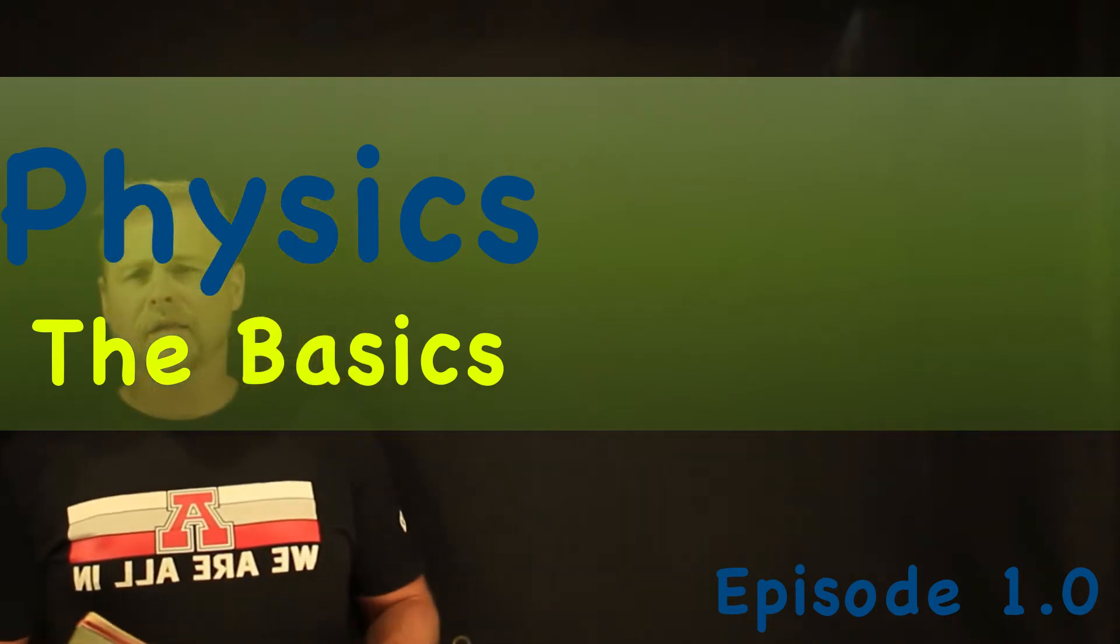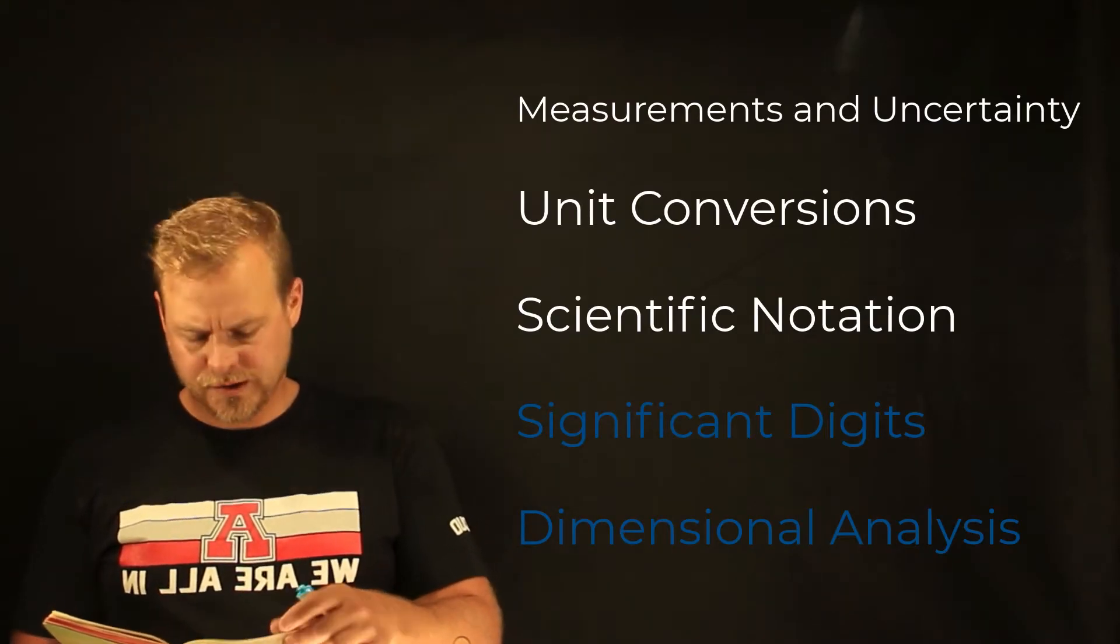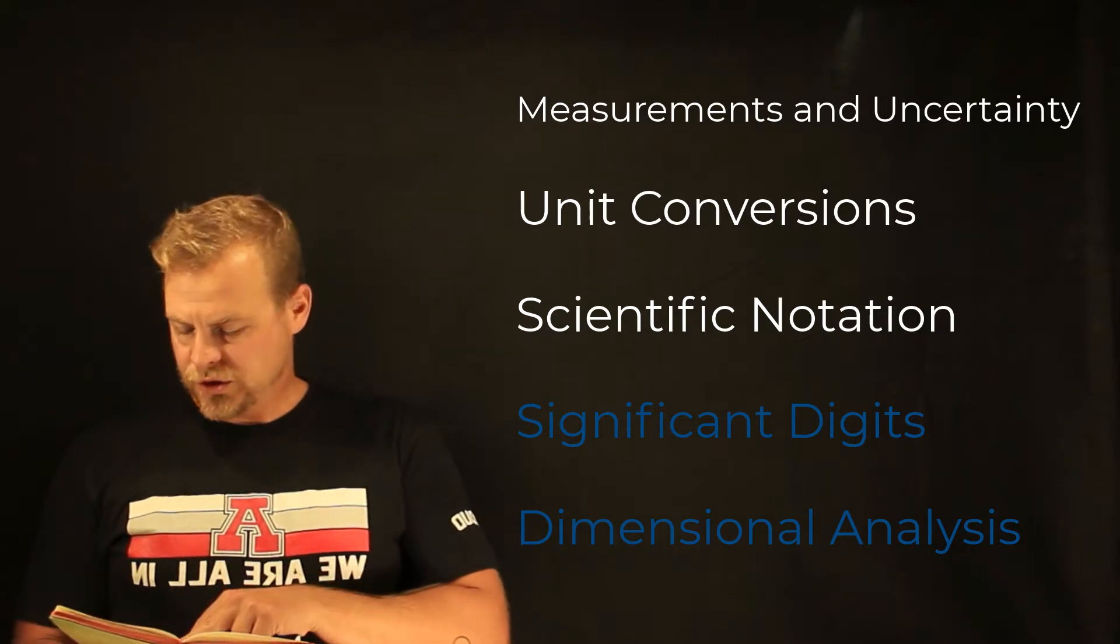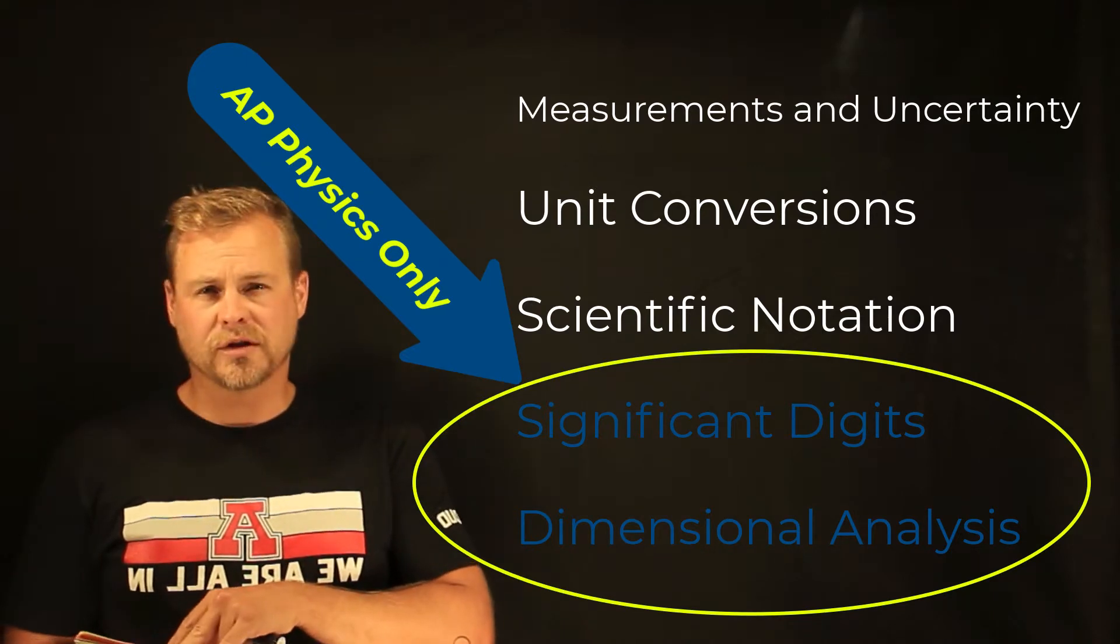Today we're going to talk about the basics of physics. So we're going to cover things like measurements, uncertainty, do some unit conversions, scientific notation, significant digits, and dimensional analysis.